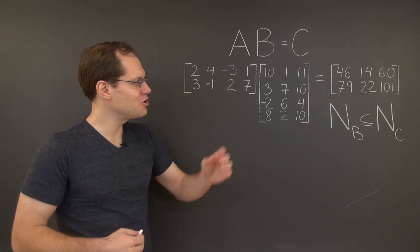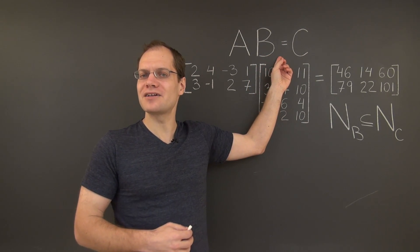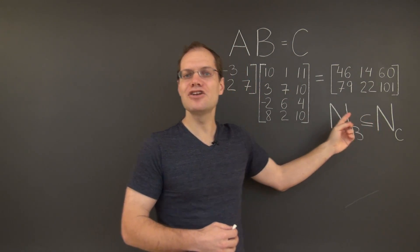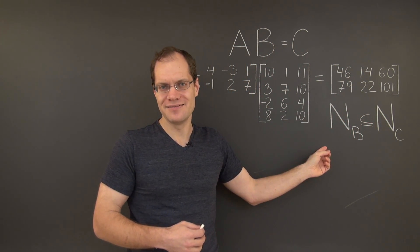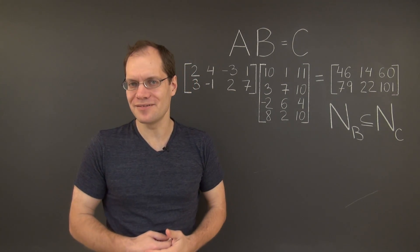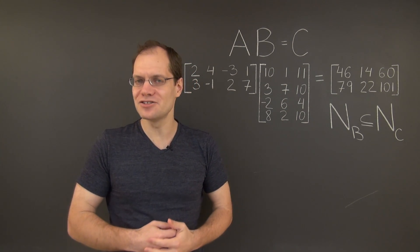In an earlier video, we showed that when C is a product of A and B, then the null space of C includes the null space of B. In this video, we're going to show the exact same thing with pure matrix algebra.